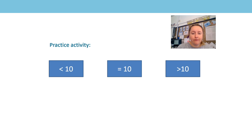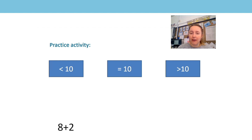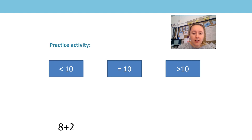Let's look at the first expression: 8 add 2. Now if I remember correctly, 10 is made of 8 and 2, 2 and 8, which means that 8 and 2 should fit in my second group because 8 and 2 is equal to 10.